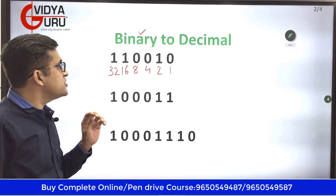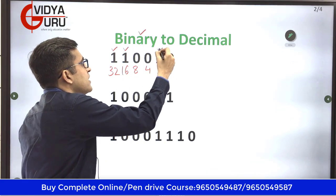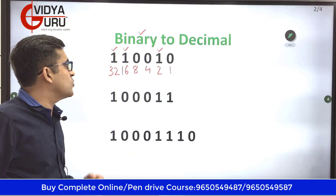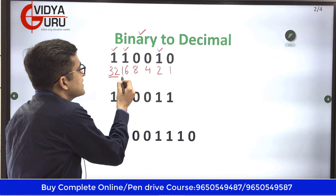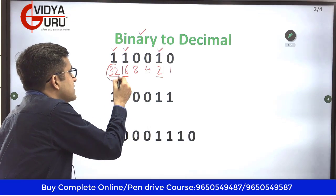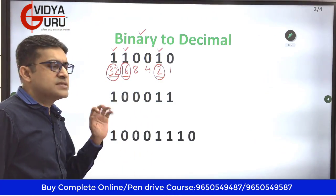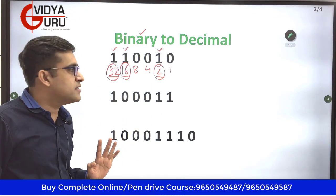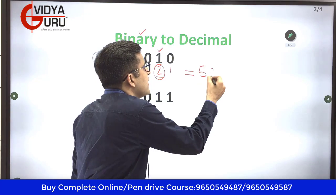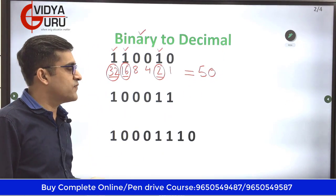Now just observe where the ones are and how many ones there are — 1, 2, and 3. There are 3 ones. Just note the numbers written below those ones: we have 32, we have 16, and we have 2. I have highlighted them for you. Simply add them and don't bother about the other numbers. So 32 and 16 becomes 48, and 48 and 2 becomes 50. The decimal number is 50 — students, how simple is that!